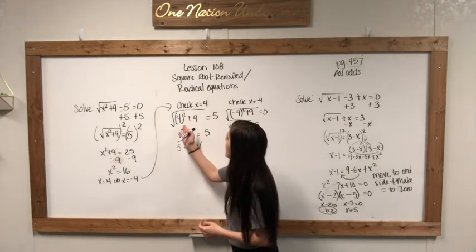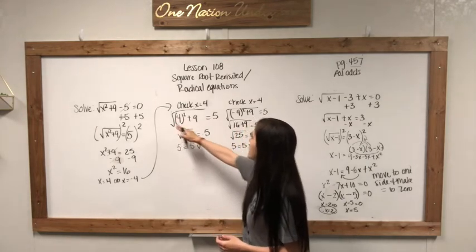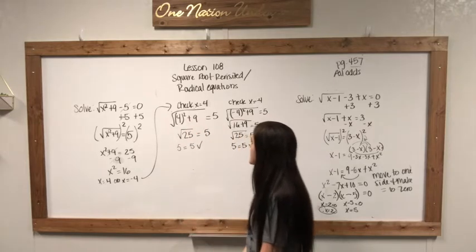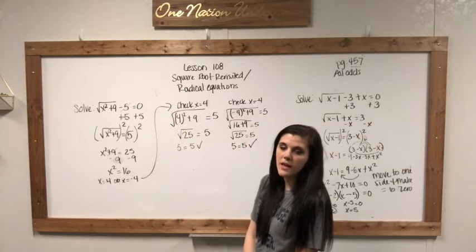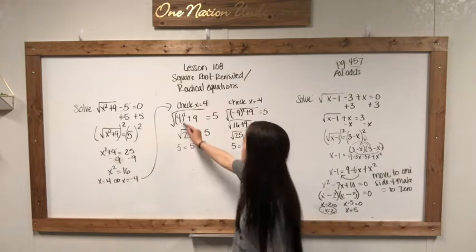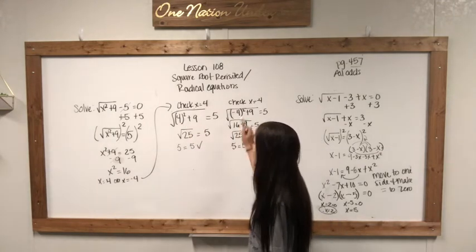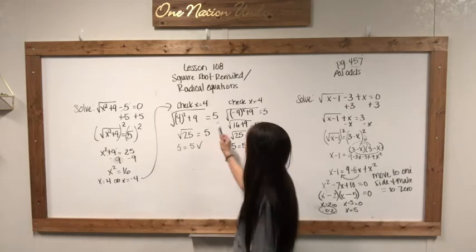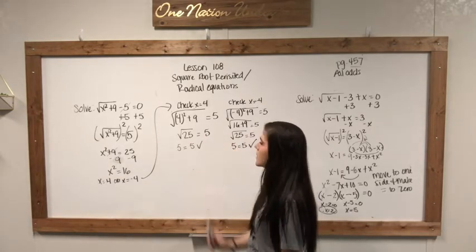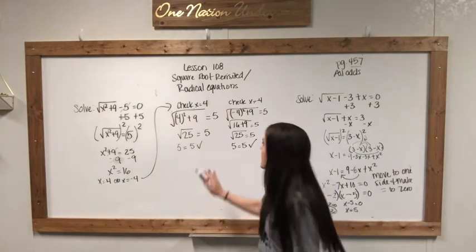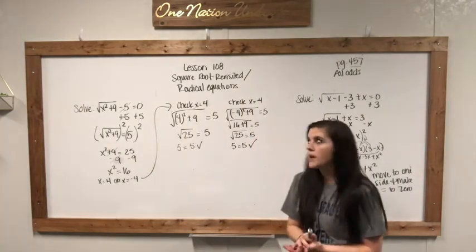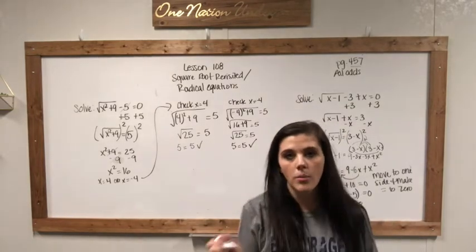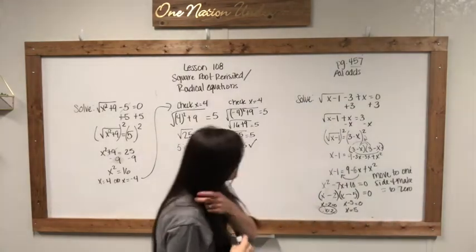We're going to check both of them. I've plugged in positive four and negative four. Raising four to the second power gives us 16, and negative four to the second power also gives us 16. So 16 plus nine is 25, and the square root of 25 is five. Both of these check out. So both negative four and positive four are solutions.